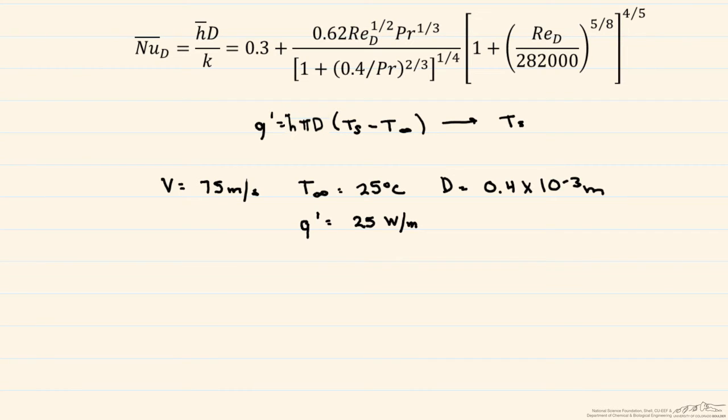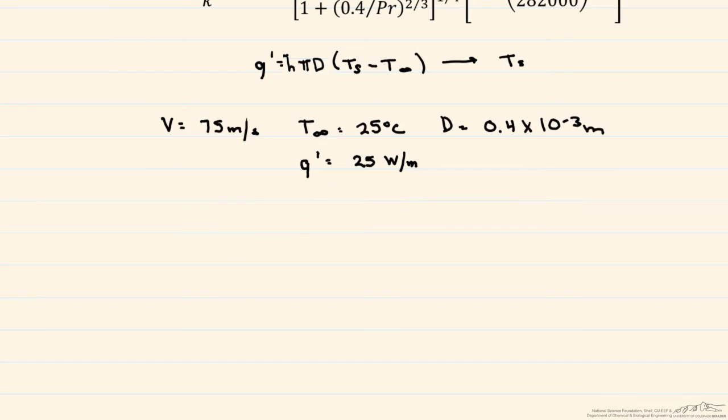In order to solve for our Nusselt number, we're going to need a Prandtl number and we're going to need to calculate a Reynolds number. So in order to do both of those things, we're going to have to look up properties of air. And so we look everything up at a film temperature.